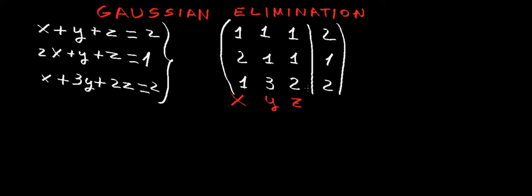Then we put a straight line and finish the matrix with the values of the right-hand side — the independent terms, the numbers that don't have unknowns — so we have 2, 1, 2. Those go to the right-hand side, called RHS. The matrix has 3 rows and 4 columns: one for x, one for y, one for z, and one for the right-hand side.